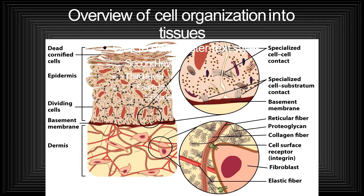These various structures are called junctions — gap junctions, tight junctions, etc. You can also see the basement membrane, reticular fiber, proteoglycan, collagen fiber, cell surface receptor, integrin, and fibroblast. There is also the presence of elastic fiber. All these portions of the cell interact with the cellular environment.